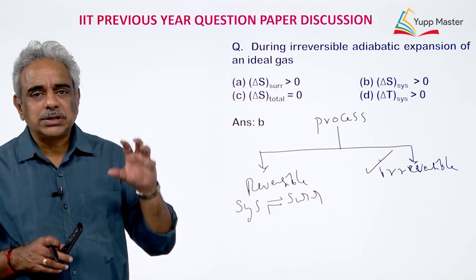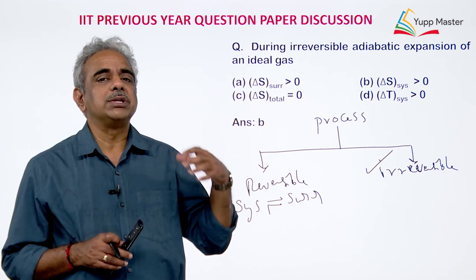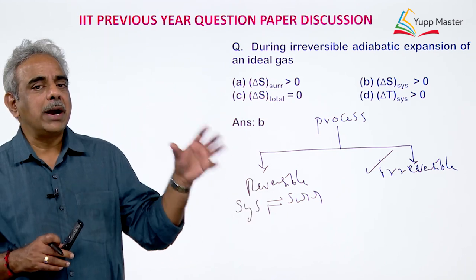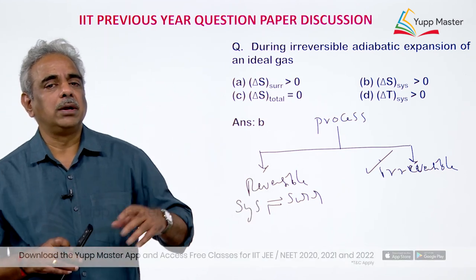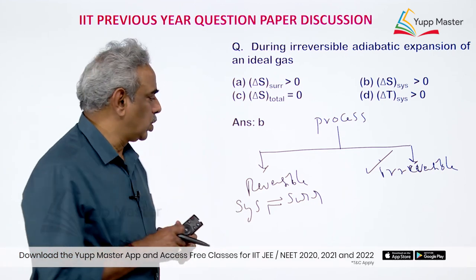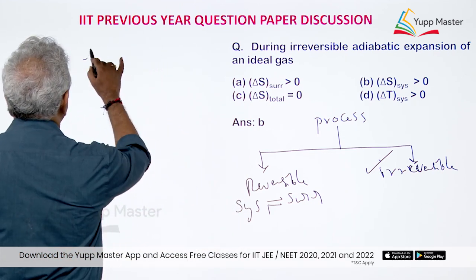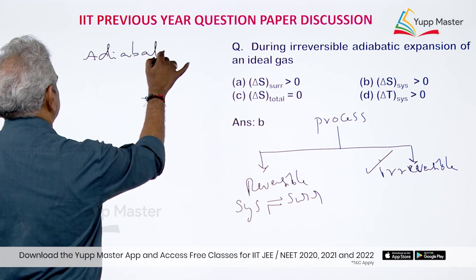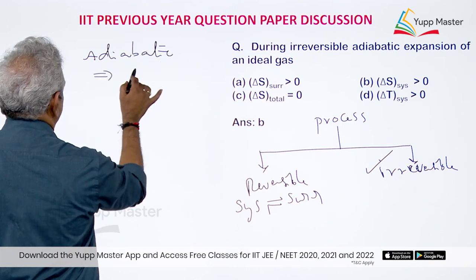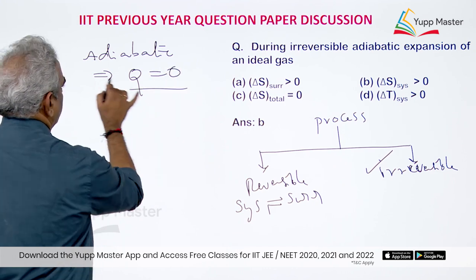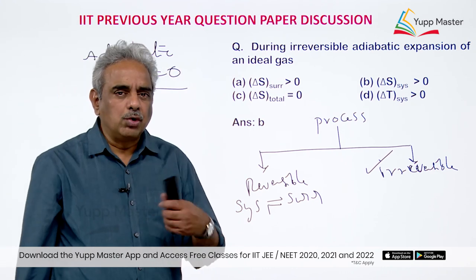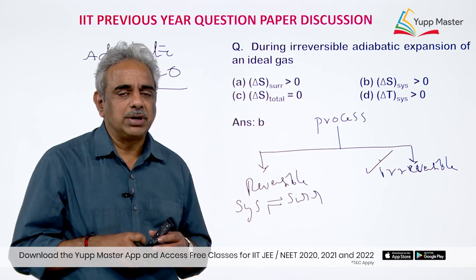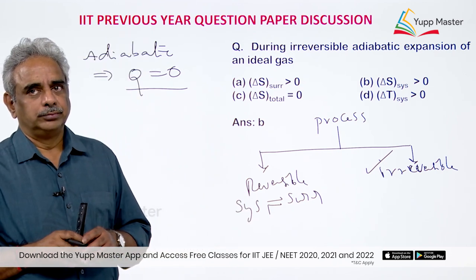Adiabatic is a condition describing under what circumstances the process takes place. In an adiabatic condition, the system and surrounding do not exchange heat, so Q = 0. Q represents the heat exchanged between system and surrounding.